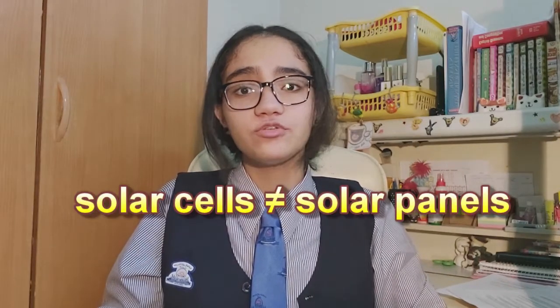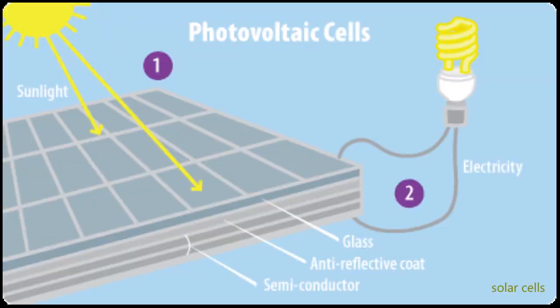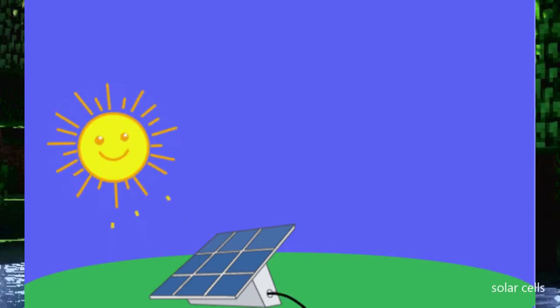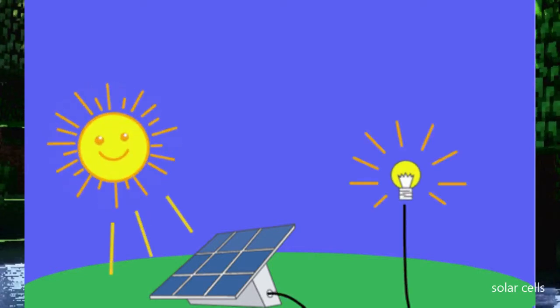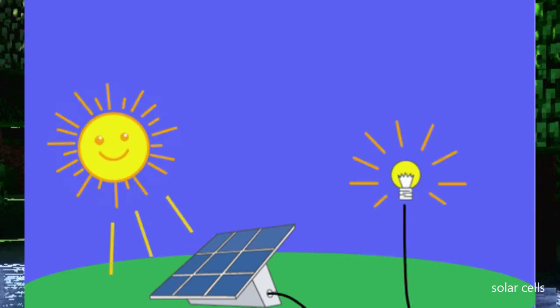We can harvest solar energy by using solar cells and solar panels, and at first you might think that the two of them are the same, but they're two totally different things. Solar cells are devices that convert light energy directly into electrical energy. The sun's rays shine on a large array of solar cells, also known as photocells, and the energy of the rays is absorbed and electricity is produced.